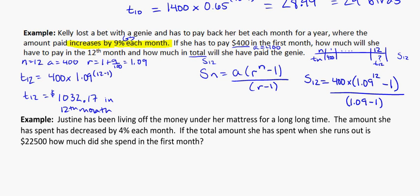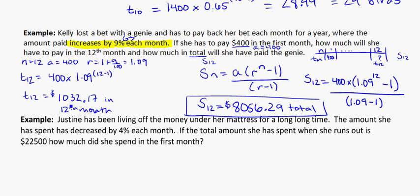So let's put that into the calculator and see what we get. And we get here, ran out of room over there. The sum after 12 months should be $8,056.29. So this is her total. So in the 12th month she pays $1,032, but total over the whole year she's paid back $8,056.29.